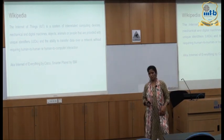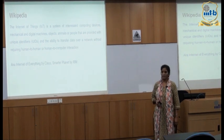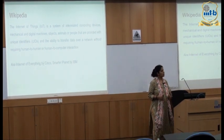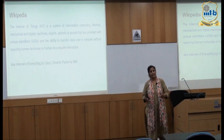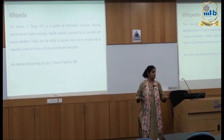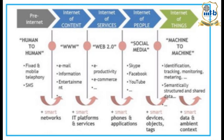There are also two related terms you might come across: Internet of Everything by Cisco, and Smarter Planet by IBM. Basically we are all going towards connecting everything to the Internet and making everything smarter. This shows the progression of Internet of Things from the pre-Internet era to what has changed over the years.